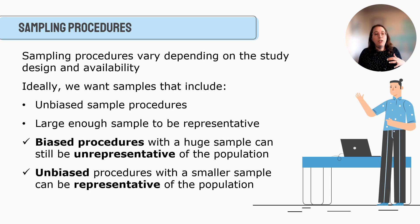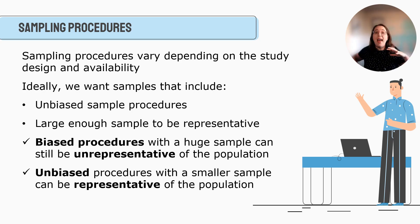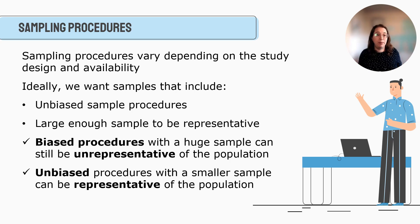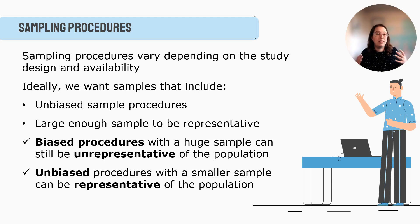There's definitely an art to this. Ruben and Babi mention that if you have biased procedures and a huge sample, it might still be unrepresentative of the population. That's one of the challenges with non-probability sampling — you can have hundreds of people but if the procedures are biased, they may not really represent the population as a whole.